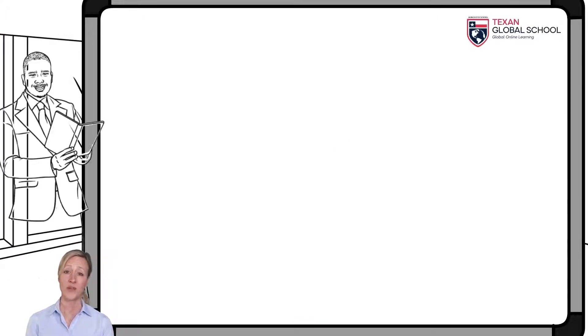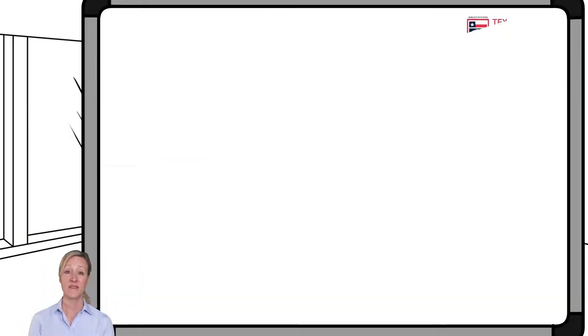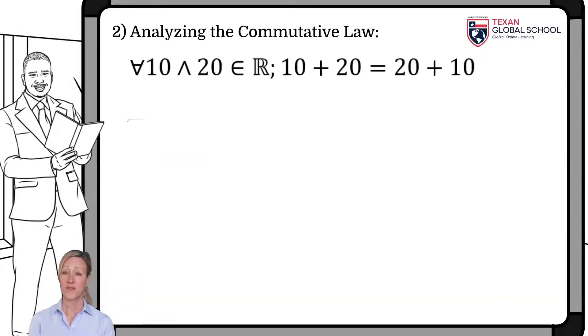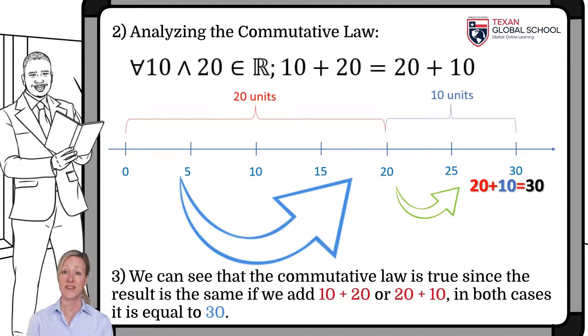Performing the operation of 10 plus 20, we draw the number line. Then, we indicate 10 units, and then 20 more, thus obtaining 30 units. If we perform the process in reverse, that is, 20 units plus 10 units, we obtain the same result of 30 units. This means that it is the same to add 10 plus 20 as 20 plus 10. In this way, we verify that the commutative law is true.